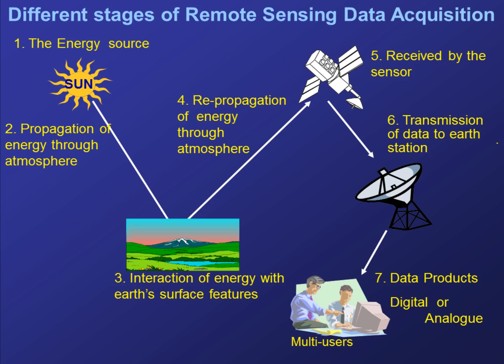In the sixth step, transmission of data: the energy recorded by the sensor has to be transmitted and processed, where data is processed into images. In the seventh step, data products are digitally interpreted and analyzed. The processed image is interpreted to extract information about the target. The final element of the remote sensing process is achieved when we apply the information to solve a problem, producing satellite images from which we generate important results.